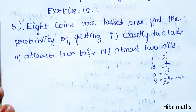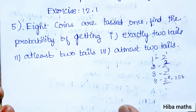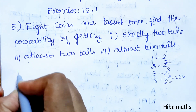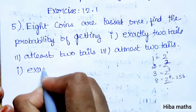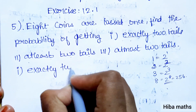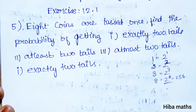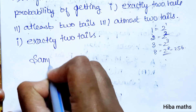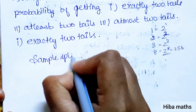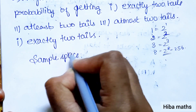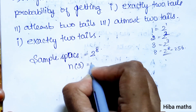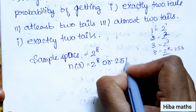So how to solve it now? Since we have 2 power 8, it is easier — we can use combinations. If you have 8 coin tosses and we want 2 tails, we can use combinations. Now we can use the first subdivision. The sample space N(S) is 2 power 8, which is 256.